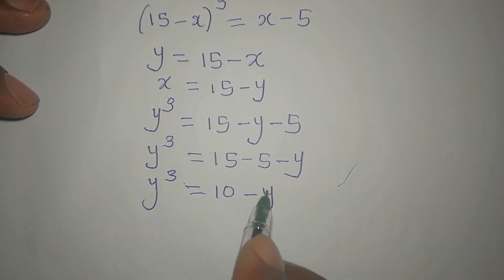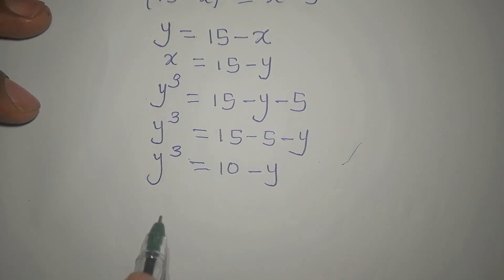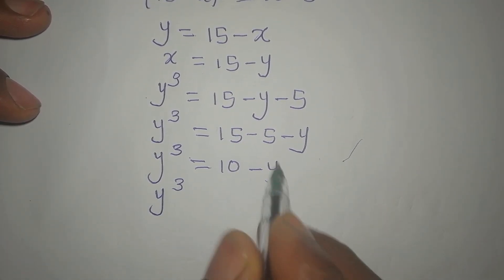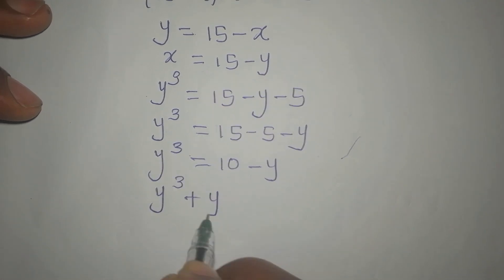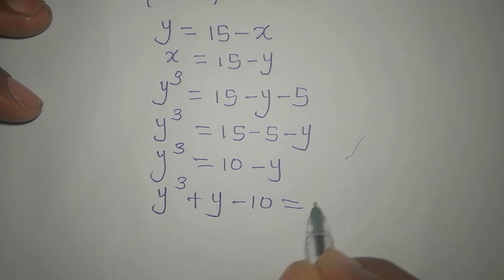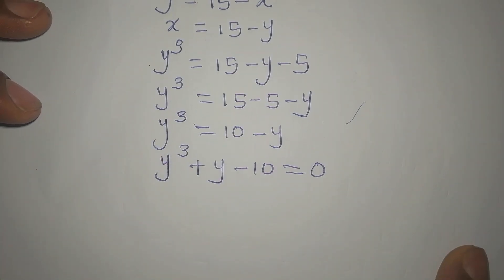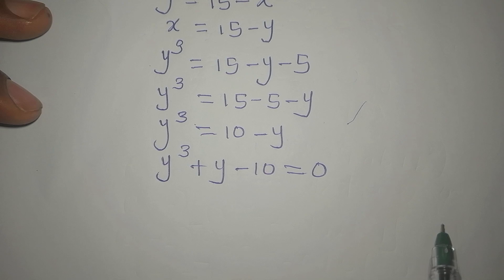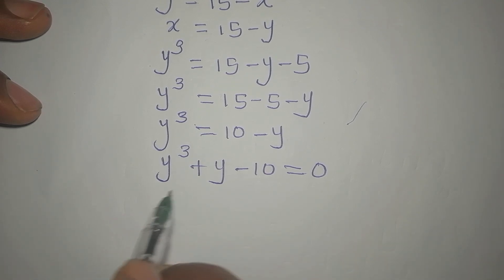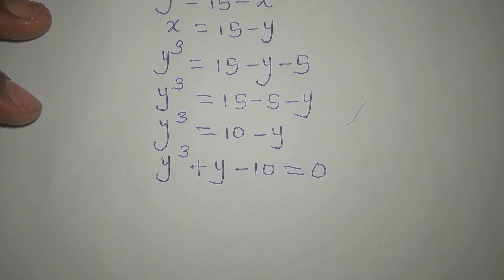Let us rearrange. Bringing everything to one side, we have Y to the power of 3 plus Y minus 10 equals zero. Now I want to factorize this, but nothing is common to all three terms, so I need to split what we have.